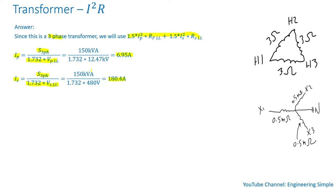Note that the side with the highest voltage has the lowest current, and the side with the lowest voltage has the highest current. Always check that your numbers make sense — for example, if you calculated 300 amps on the high-voltage side, that should be a flag that something is wrong.